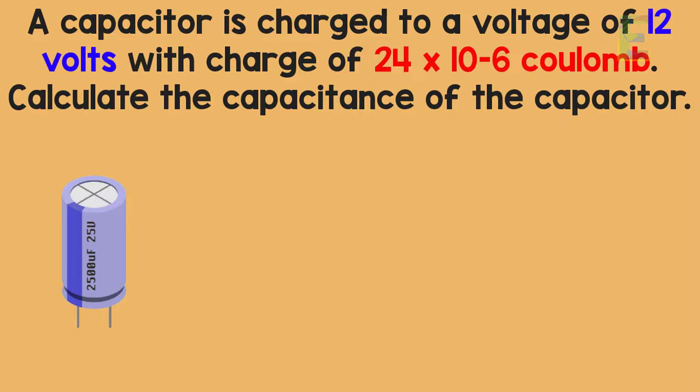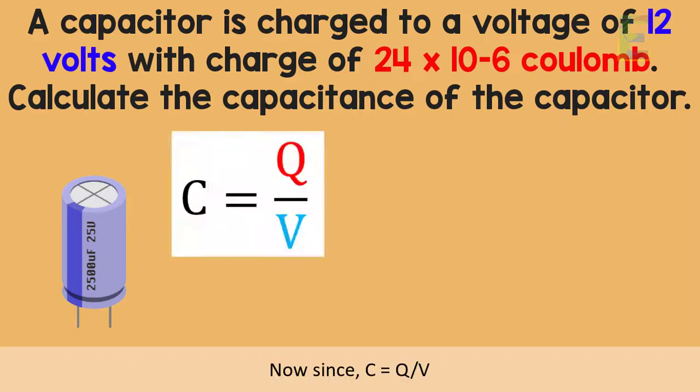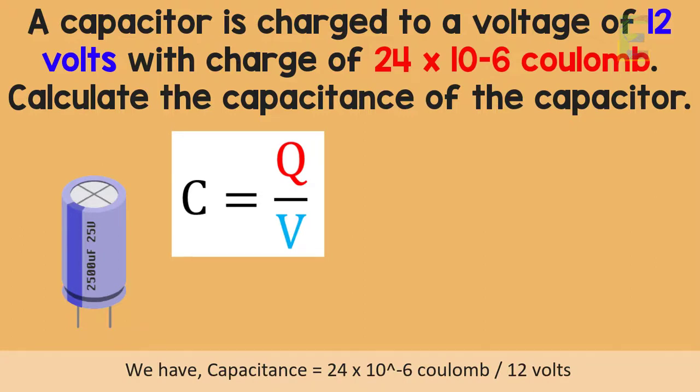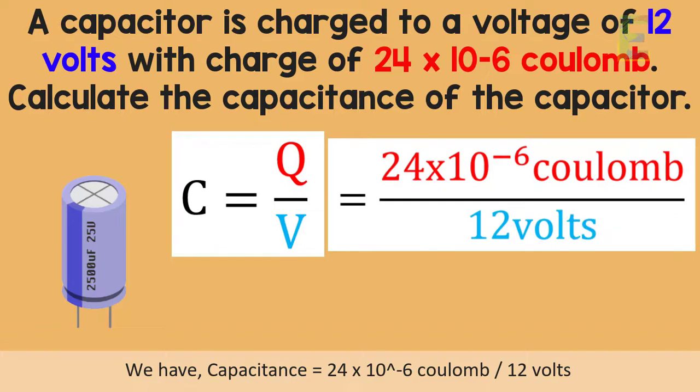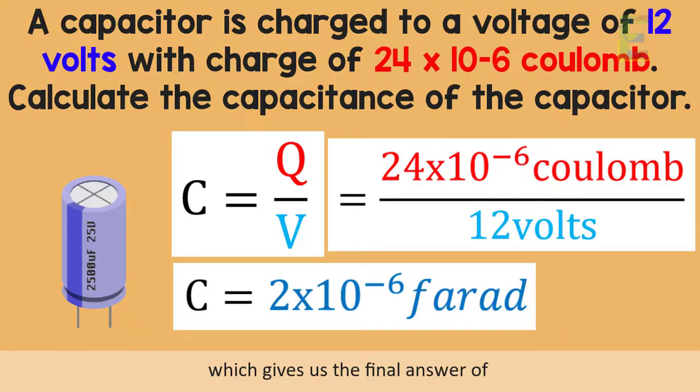Calculate the capacitance of the capacitor. Now since C equals Q over V, we have capacitance equals 24 times 10 to the negative 6 coulomb divided by 12 volts, which gives us the final answer of 2 times 10 to the negative 6 Farad.